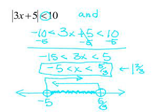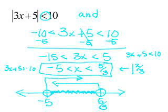If you want to check, substitute negative 5 into 3x plus 5 is greater than negative 10, and substitute 5/3 into 3x plus 5 is less than 10. When you do the math you'll see they are your boundary points — you will not get true statements, which is why you have open circles on your number line.